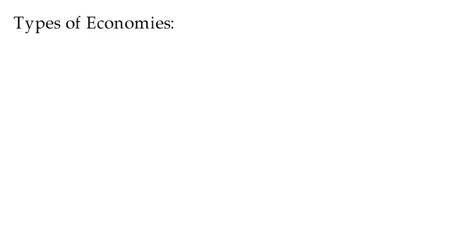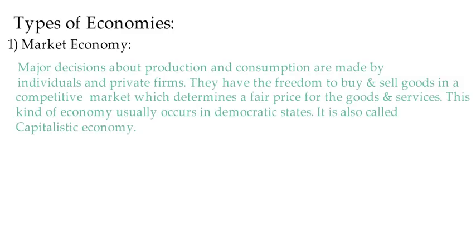Let's move on to types of economies. First is the market economy. In a market economy, major decisions about production and consumption are made by individuals and private firms. They have the freedom to buy and sell goods on a competitive market, which determines a fair price for goods and services. This kind of economy usually occurs in democratic states and is also called a capitalistic economy.